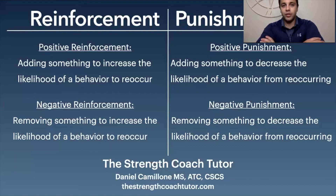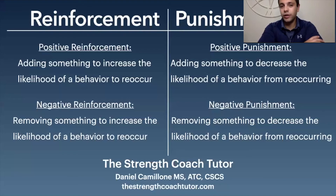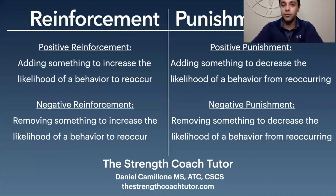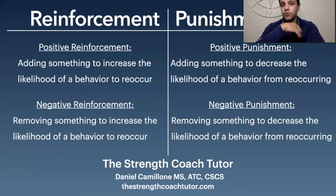With negative punishment, you remove something from the situation to decrease the likelihood of a behavior happening again. Using the same scenario — athletes went out drinking and partying the night before an early morning workout — to decrease the likelihood of this behavior, you could remove their post-workout snack or remove one of their water breaks. You're taking something away to decrease the likelihood of them going out and partying the night before a workout again.